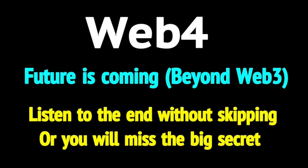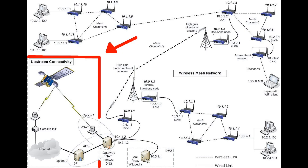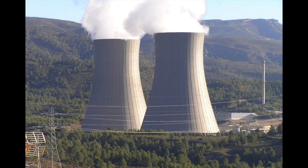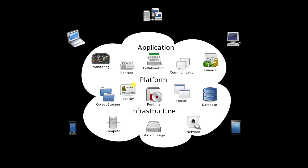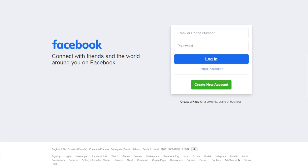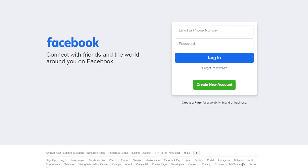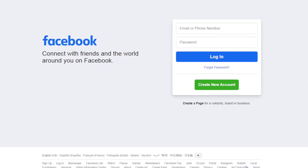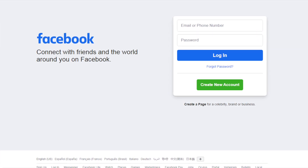These were decentralized to a point, but actually controlled by companies or governments. For example, governments control the endpoints of the internet, the internet infrastructure, and they control the power generation. Companies control the big applications — they created the cloud. Facebook, for instance, owns all the data and allows people to connect with each other, but it all goes through a huge server.